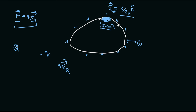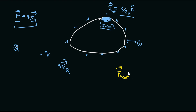What we need is the field due to the charges which are not the patch — that is, the rest of the charges. These are charges outside the conductor and charges on the outer surface of the conductor except the patch. We can call that the electric field due to the rest of the charges, which equals the net electric field minus the electric field produced by the patch.